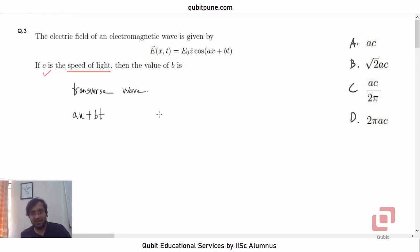In usual notations, a is called as the wave number, which is given by 2π by λ, where λ is the wavelength of light, and b is the angular frequency.